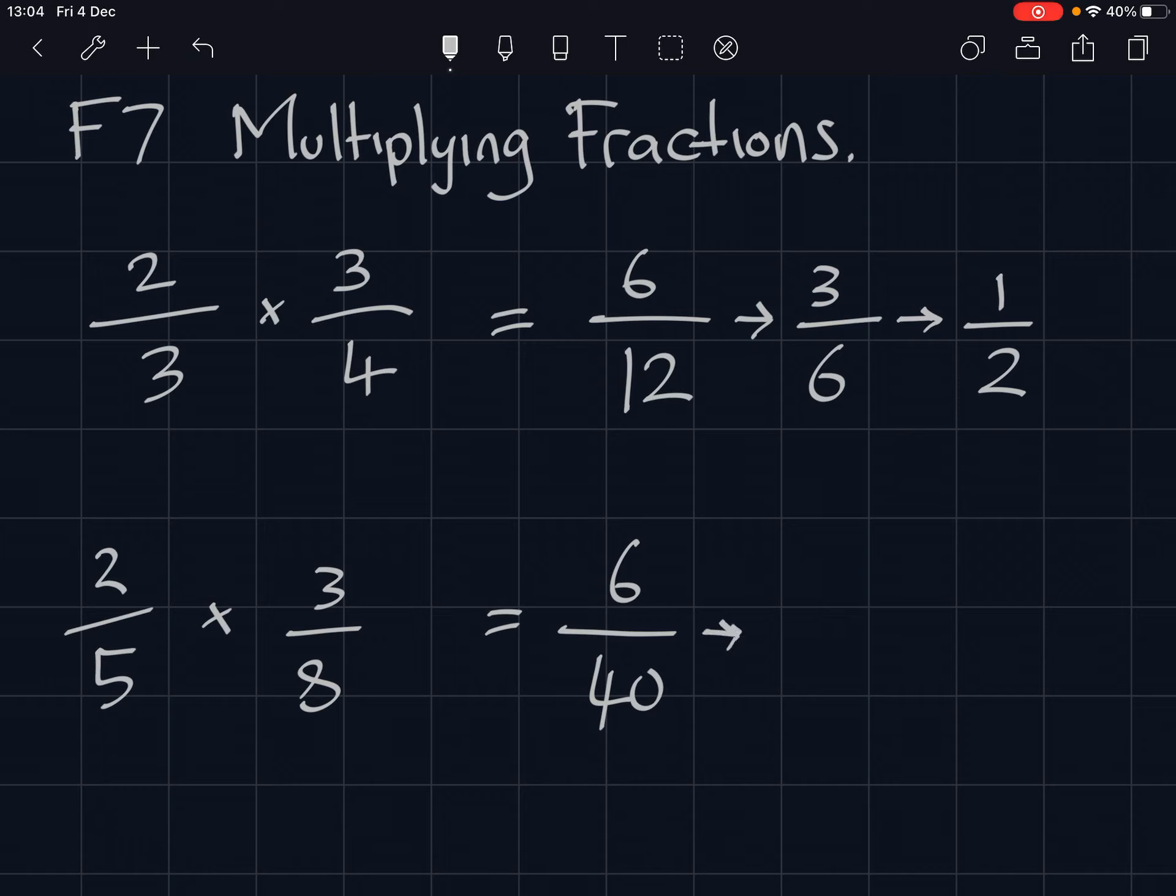Well, we can half both numbers, giving us three over twenty. And that can't be reduced any further. So multiplying fractions, you just times the top numbers together and times the bottom numbers together. And I will see you in F8.